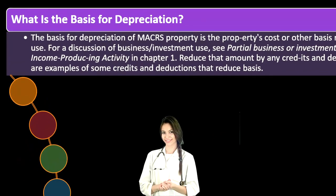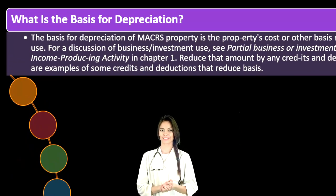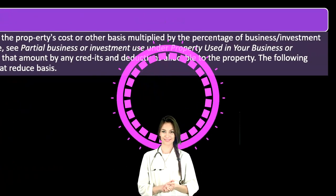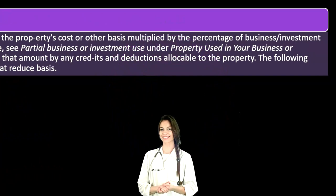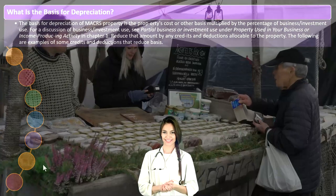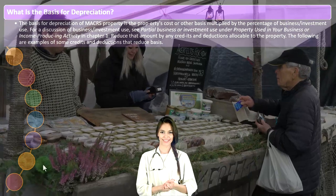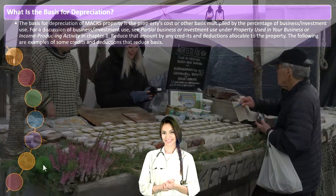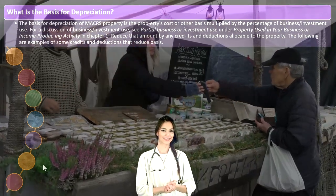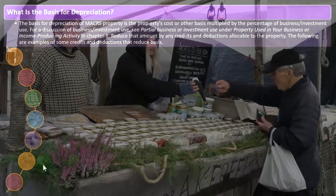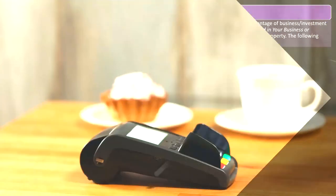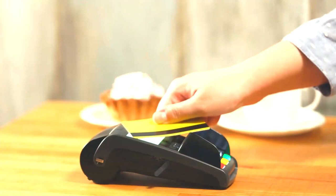For a discussion of business or investment use, see the partial business or investment use section under 'property used in your business or income-producing activity' in chapter one. You also reduce that amount by any credits and deductions allowable to the property — the following are examples of some credits and deductions that reduce the basis.